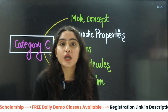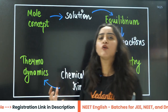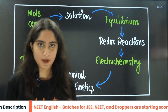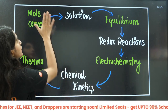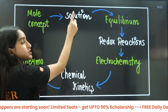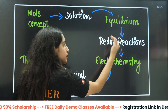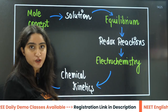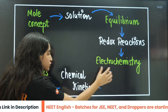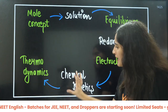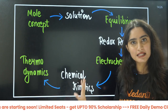For the sequence of doing physical chemistry: firstly do mole concept, then jump to solutions, then do equilibrium, then redox reaction, then electrochemistry. After electrochemistry, you can start with either chemical kinetics or thermodynamics — that is totally your choice.